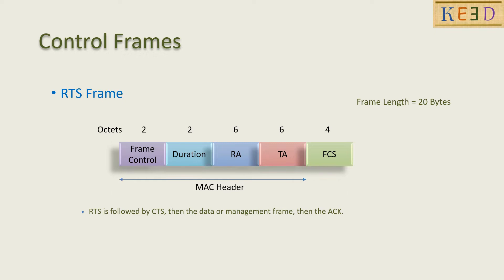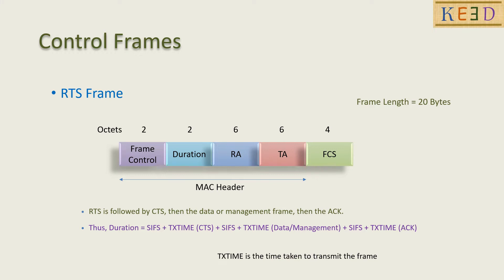RTS is followed by CTS, then the data or management frame, and then the ACK frame. Thus, the duration in RTS equals SIFS plus TX time for CTS plus SIFS plus TX time for data or management frame plus SIFS plus TX time for ACK. TX time is the time taken to transmit the frame.